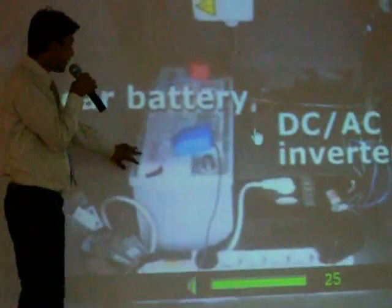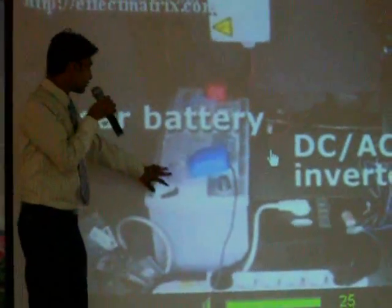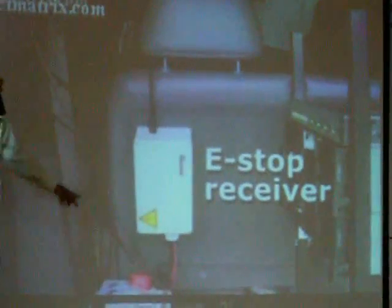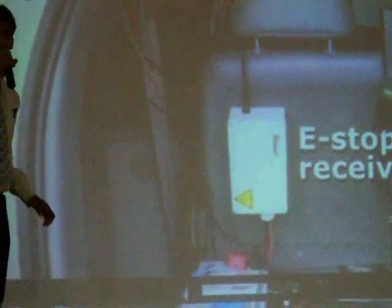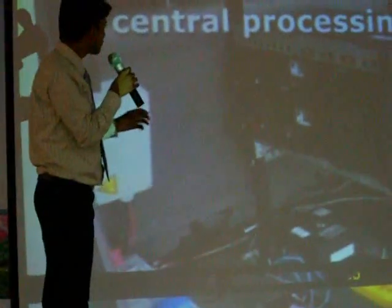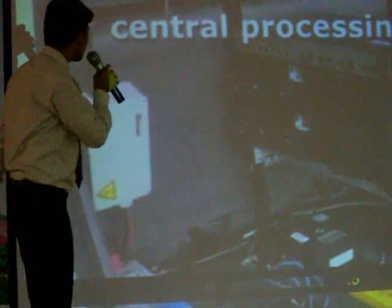Now let's discuss some internal components of the autonomous car. This is the car battery, which provides electricity current to the heavy computer system. This is the e-stop receiver. The position will be provided by e-remote to stop the car when it is required. This is the electric processing unit of 2 GHz.